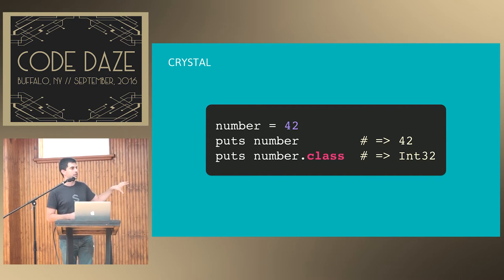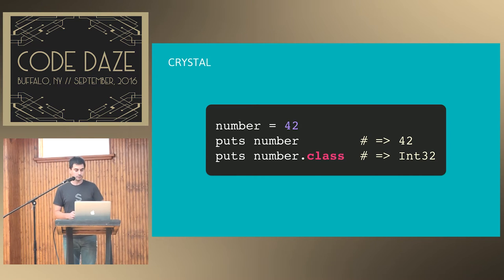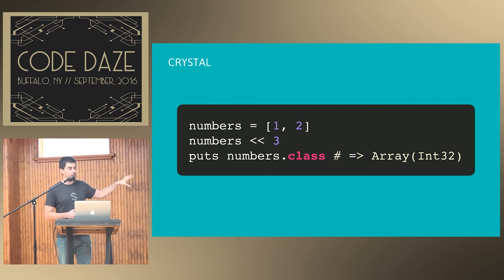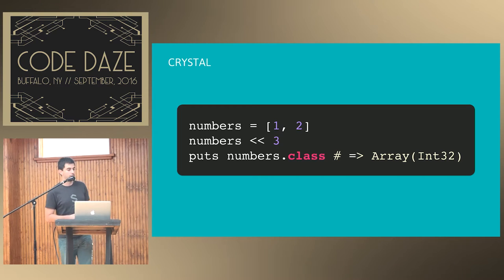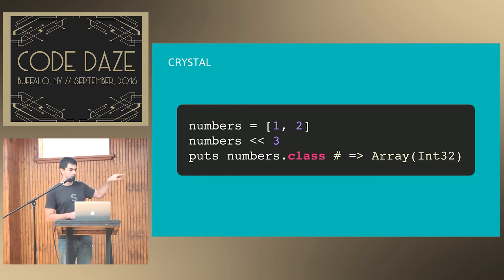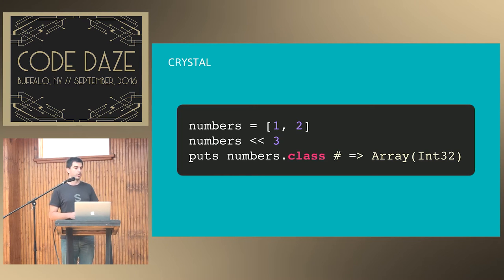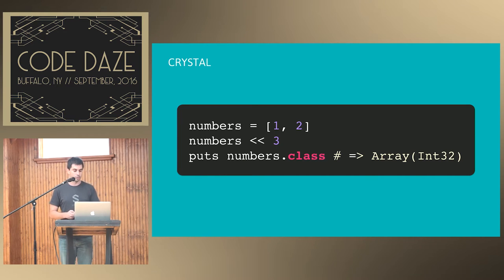It's not that kind of typed language because it is able to infer that. If you try it with arrays — you have numbers equals an array with one and two, and then you shovel (for those not familiar with Ruby, that last assign sign is called a shovel operator — it just puts something at the end of the array) — it tells you that it's an array of Int32s. It's able to infer that. So it's pretty easy to get started and it doesn't stand in your way.